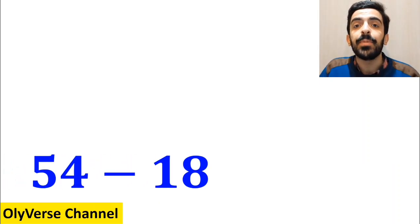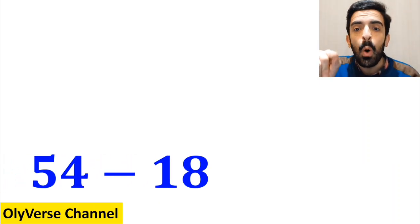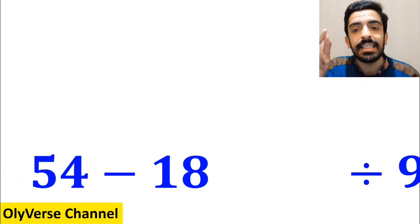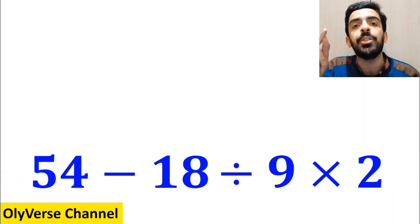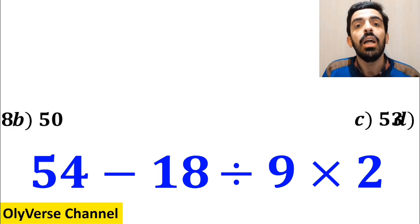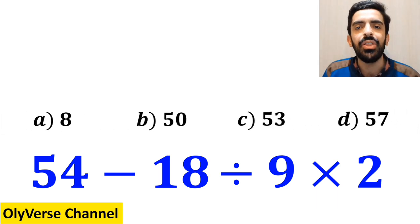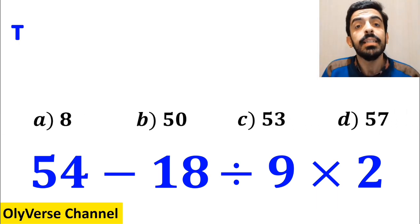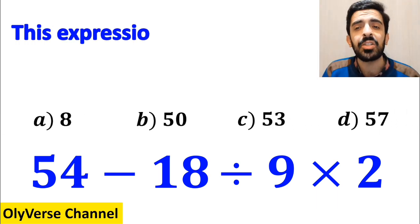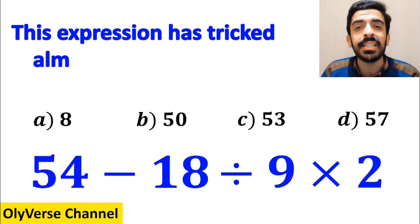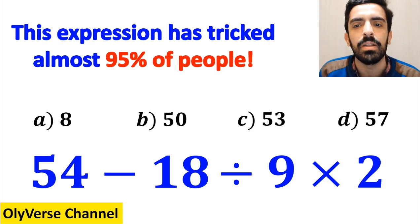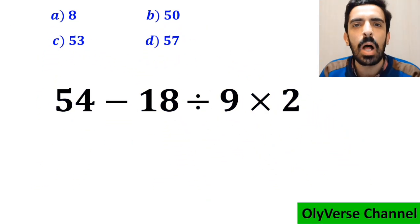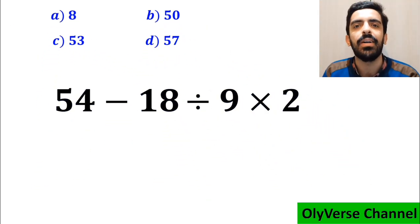What is the value of the expression 54 minus 18 divided by 9 then times 2? Which option do you think is the correct answer to this question? This expression has tricked almost 95% of people. Let's take a colossal look and solve it together.